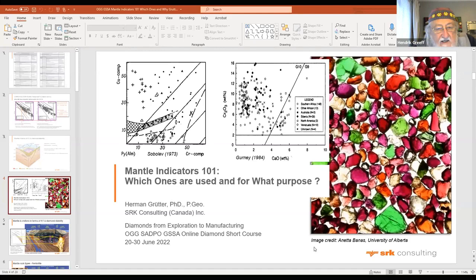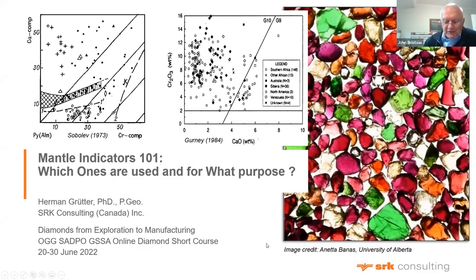Dr. Herman Gritter is next to talk about cumulative indicator mineral and micro-diamond technologies in the pre-mining assessment of primary diamond deposits. He is from SRK Consulting Canada in Vancouver, and is an adjunct professor with the University of Alberta. He grew up in Cape Town and studied at UCT under John Gurney.